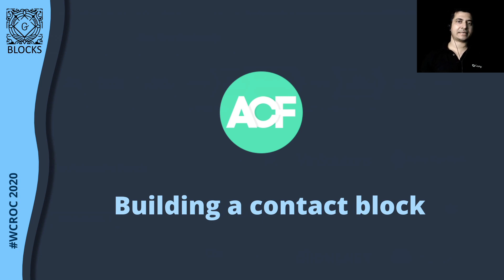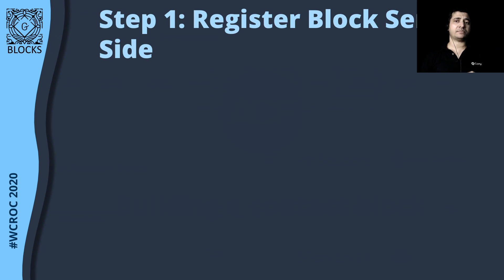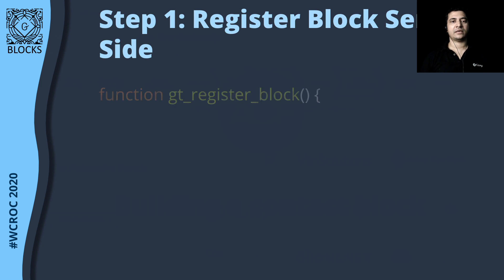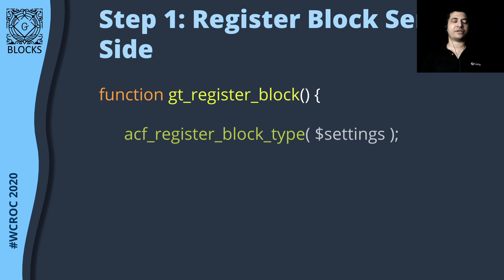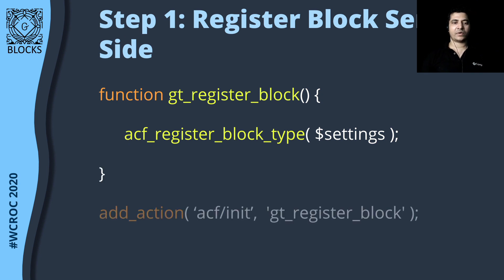How is that implemented? Step one, as we discussed — if you remember from the previous slide — we need to register the block server-side. We create a custom function inside of which we call the function called `acf_register_block_type`, and we just have to pass some settings inside of it. Then you need to hook it on the `acf/init` hook.